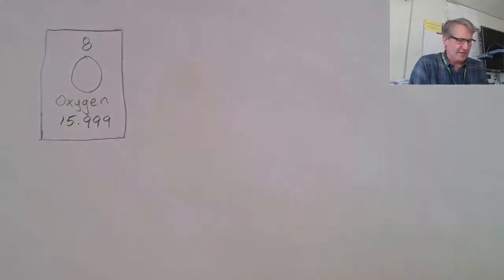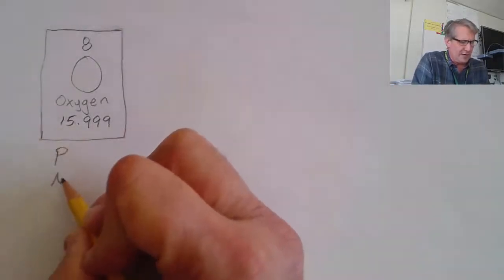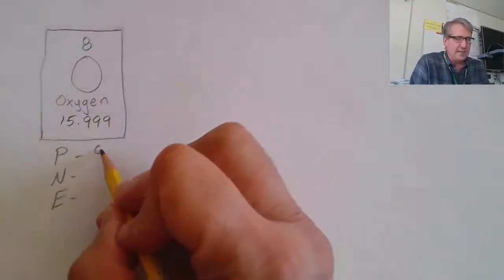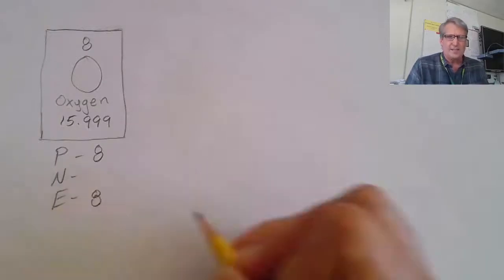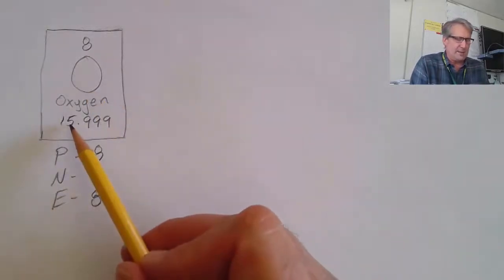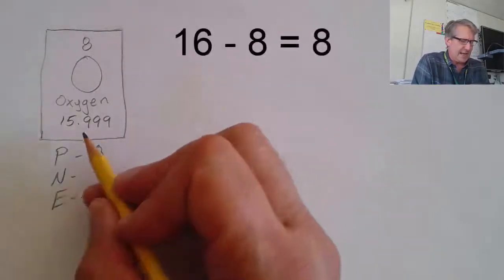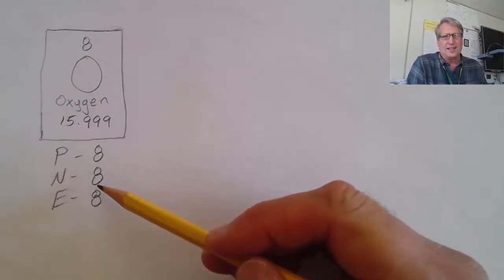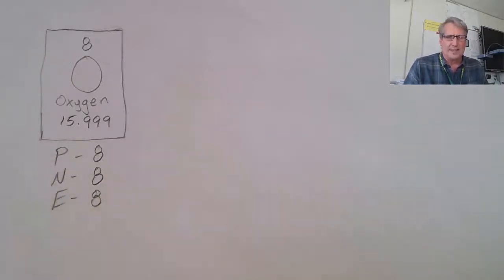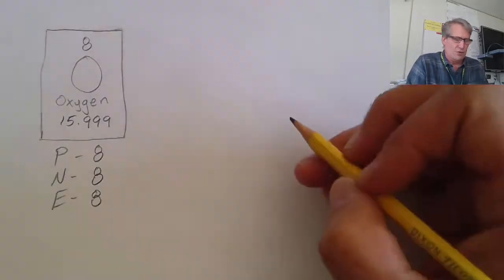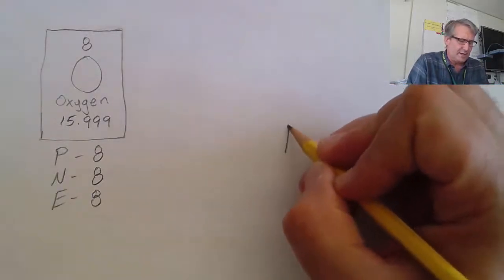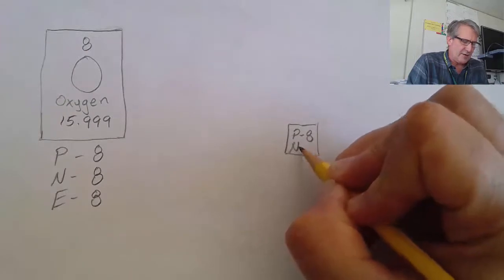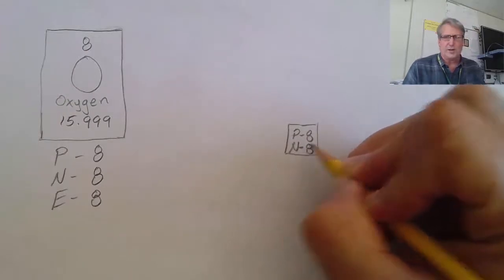Now let's make a Bohr model for oxygen. The number of protons is eight, so I immediately know there are eight electrons. Then rounding off the atomic mass gives 16, minus eight protons equals eight neutrons. The number of protons and neutrons is not always the same, but in many of the lighter elements it ends up being the same. Drawing a Bohr model for oxygen, we start by representing the nucleus with eight protons and eight neutrons.